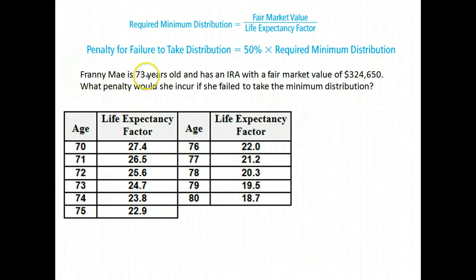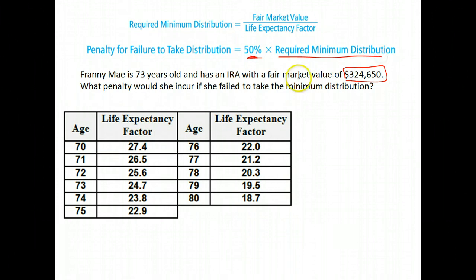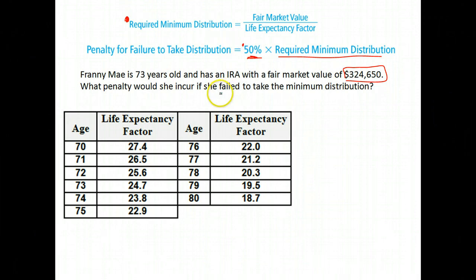Here we have Frannie Mae. Frannie Mae is 73 years old. She has an IRA, and its fair market value is $324,650. What is the penalty she would incur if she failed to take the minimum distribution? If you don't take out enough money, you are penalized — the penalty is 50% of your required distribution. So we're going to find her required minimum amount and then take 50% of that.